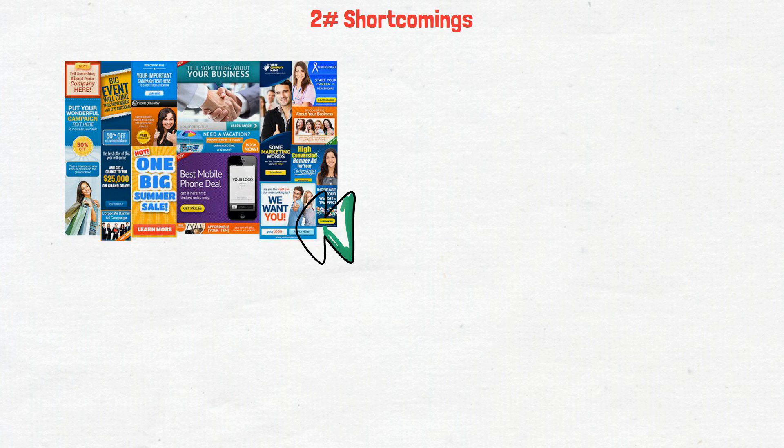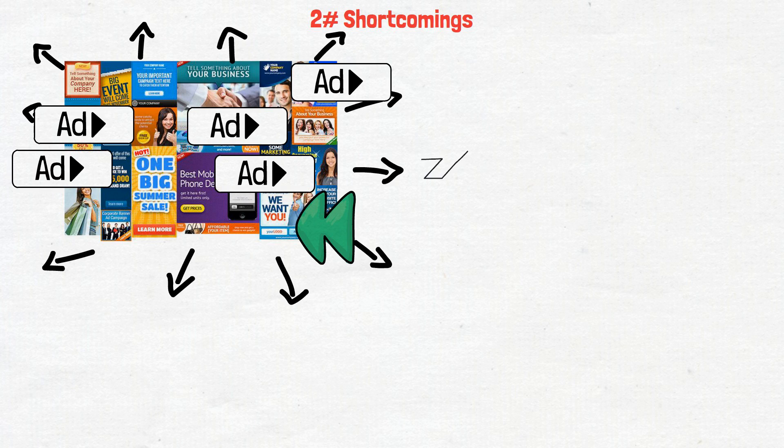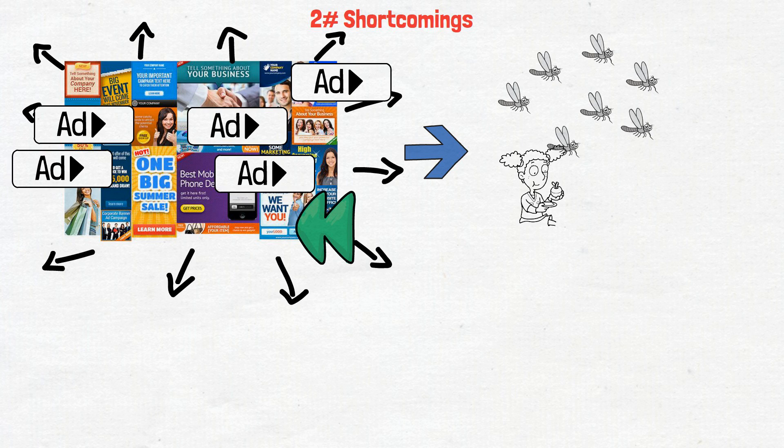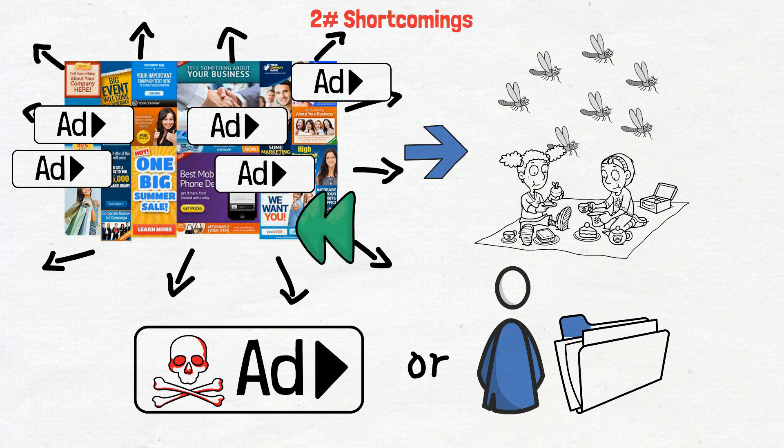And remember those ads we talked about earlier? Well, sometimes there are a lot of them. They can pop up all over the place, and let's be real, too many ads can be as annoying as a swarm of mosquitoes at a picnic. Some faucets might even have sketchy ads or ask for personal information, which can be a big no-no in the online world.